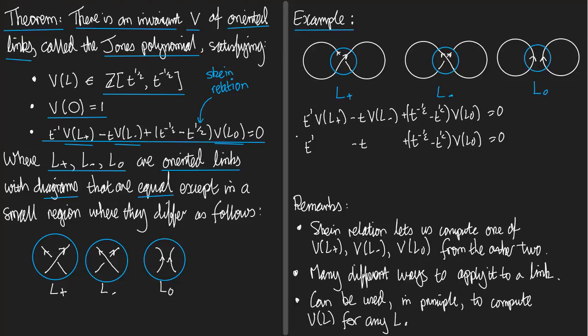So, I get this equation, which I can then rewrite as saying that V(L0), that's going to be (T - T^-1) all divided by (T^-½ - T^½), which is equal to, if you work it out, that's minus T^½ minus T^-½. So, after all that, what we did was we worked out the Jones polynomial of the trivial link of two components.